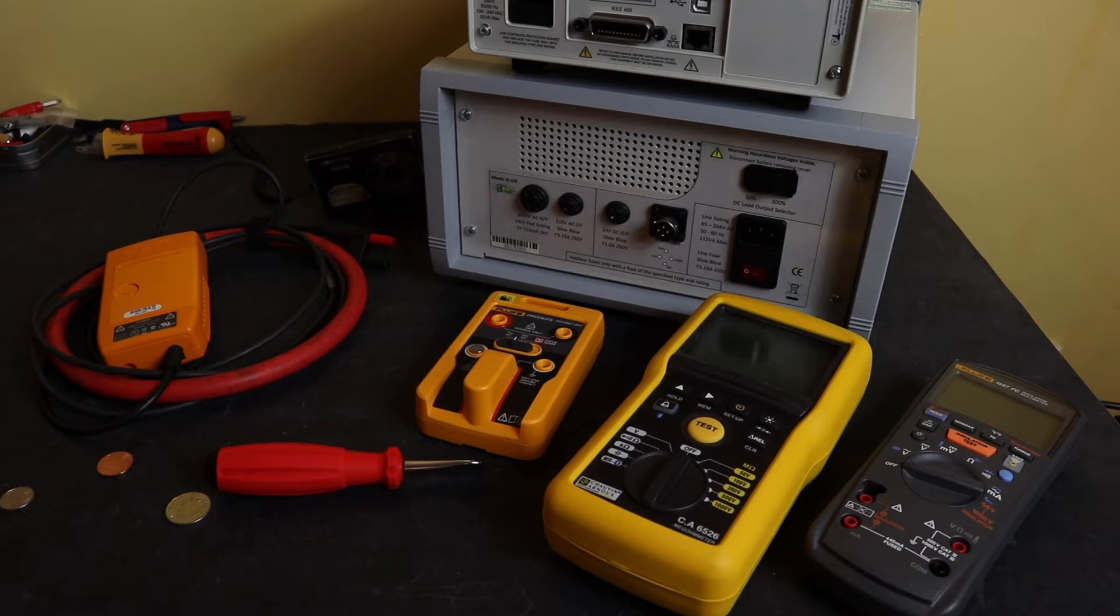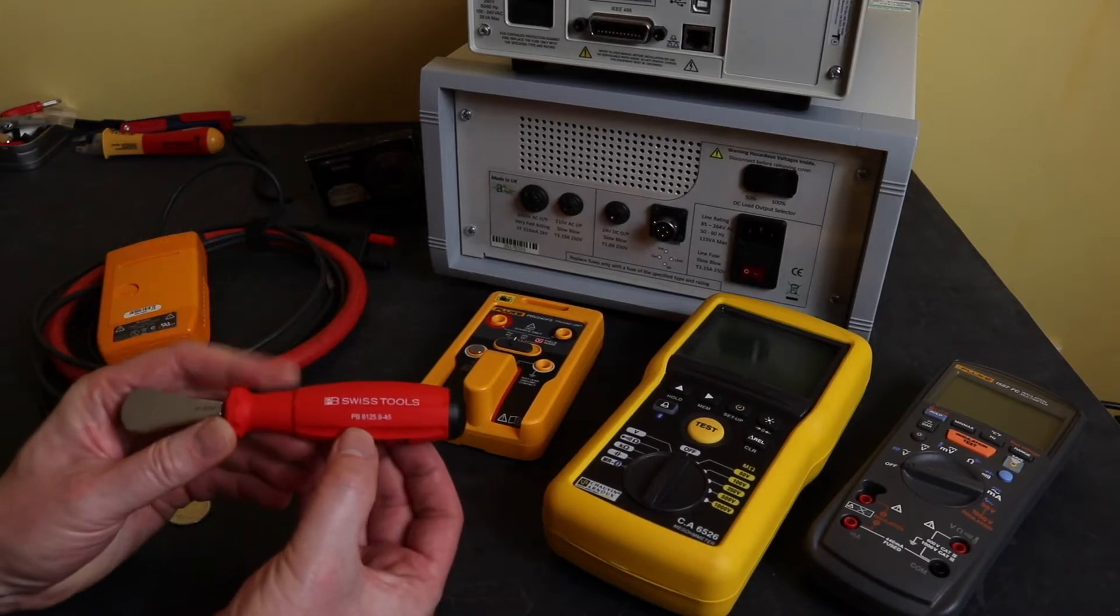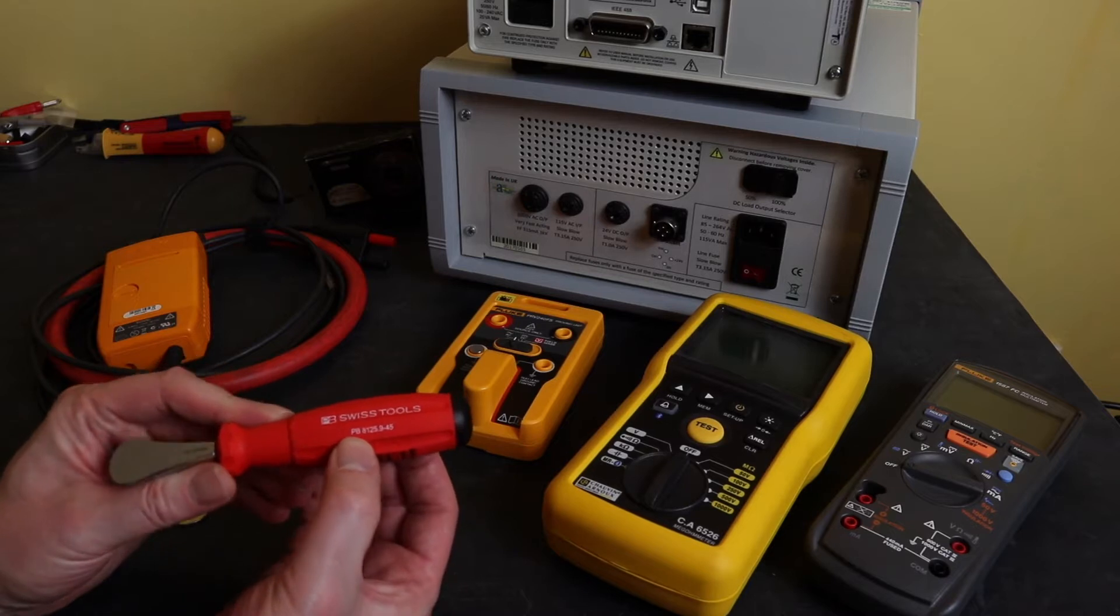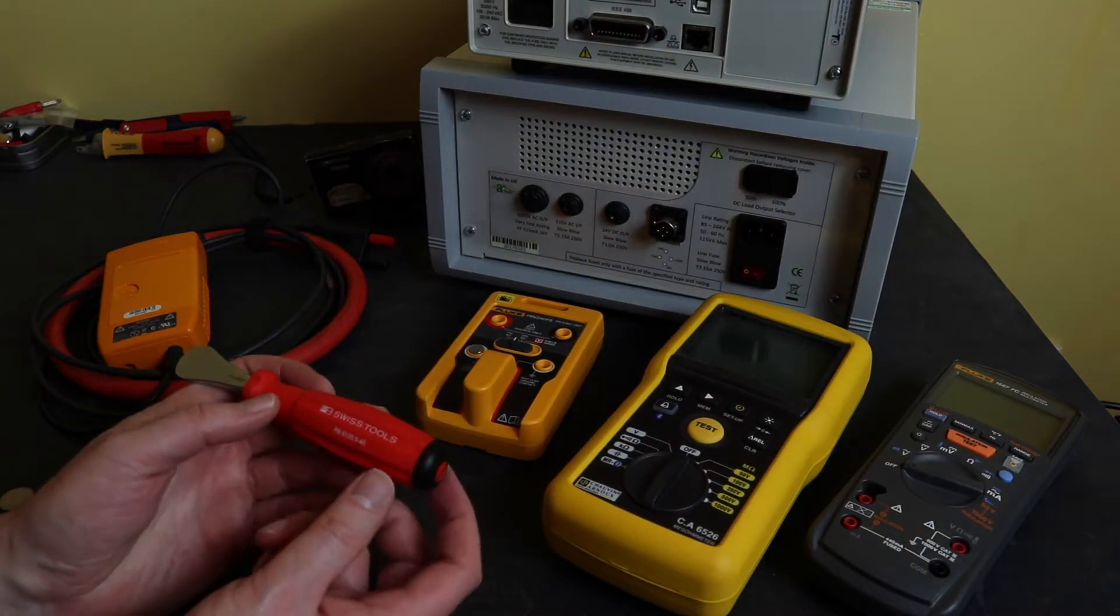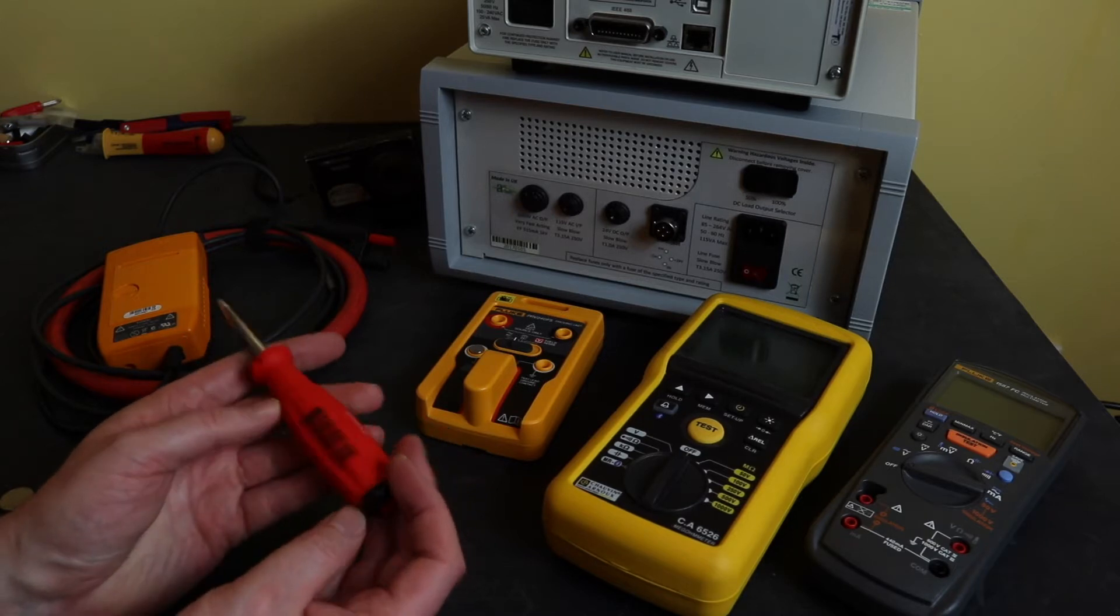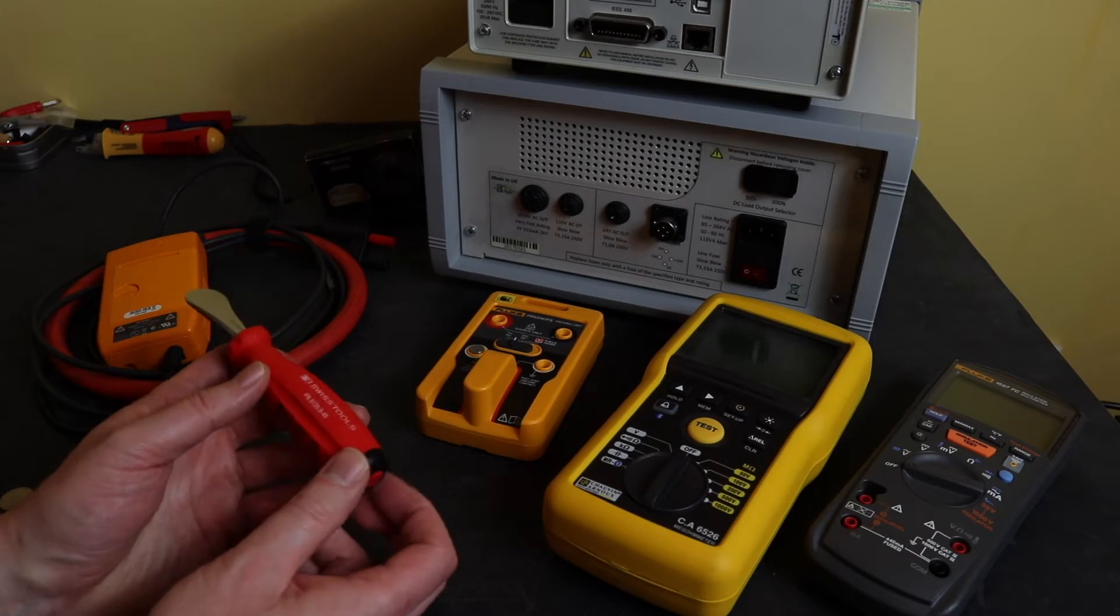Welcome back to the channel. In this video I'm going to take a look at a coin driver from PB Swiss Tools. This is the little device here, part number PB8125. This is actually the first PB Swiss tool that I've purchased, along with a couple of other bits and pieces. This is the one I'm going to go through today.